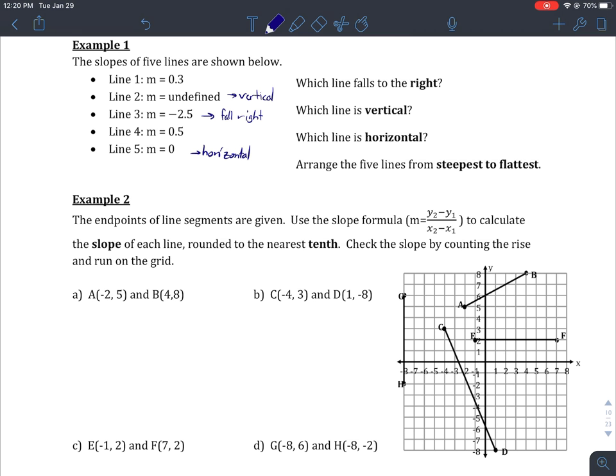Arrange the five lines from steepest to flattest. The undefined one is going to be the steepest - maybe we'll make that a 5 - and flattest is going to be 1. We'll start with our flat line of zero. The next biggest value is 0.3, then 0.5 is my next one, and my next steepest line has to be line three - the biggest one I've got. My vertical one is the one that's the most steep - it's perfectly vertical, straight up and down.